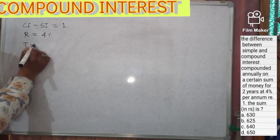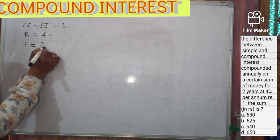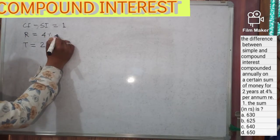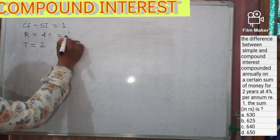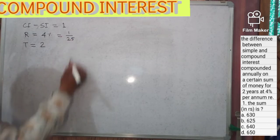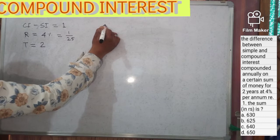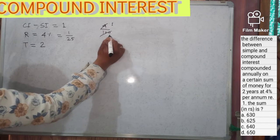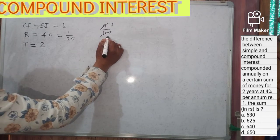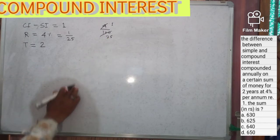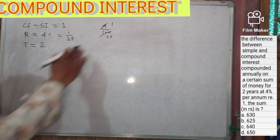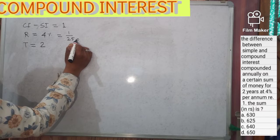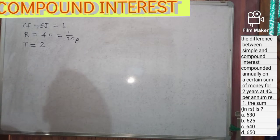Four percent we can write as one by twenty-five, because four percent means four by hundred, which simplifies to one by twenty-five. So we can write the rate as one by twenty-five. This is the principle, and we need it for two years.